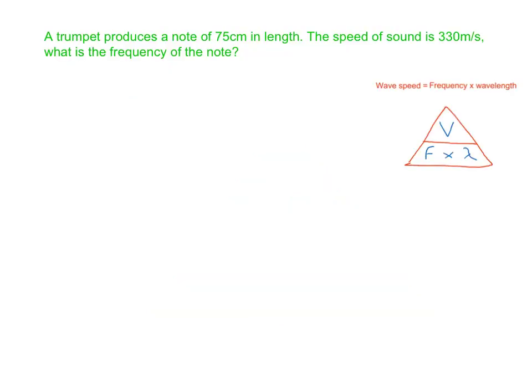Let's have a go at applying the wave equation formula. The question is: a trumpet produces a note with a wavelength of 75 centimetres. The speed of sound is 330 metres per second — what is the frequency of the note? I'd suggest you pause the video, have a go yourself, then come back and look at the worked example.